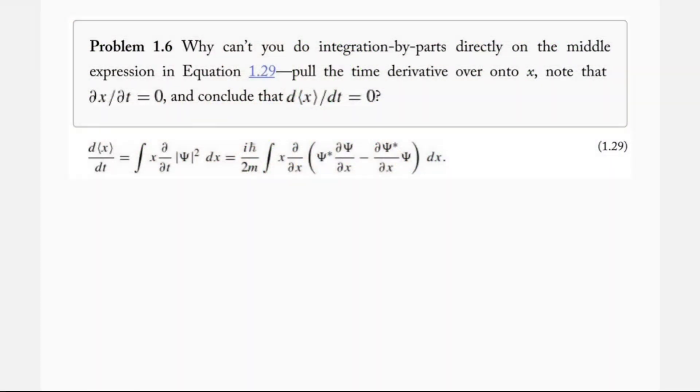Today we'll be taking a look at problem 1.6 from Griffith's Introduction to Quantum Mechanics, third edition. In this question we're asked why we can't do integration by parts directly on the middle expression in equation 1.29.